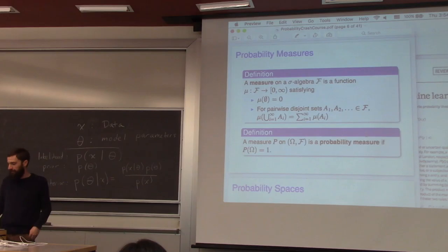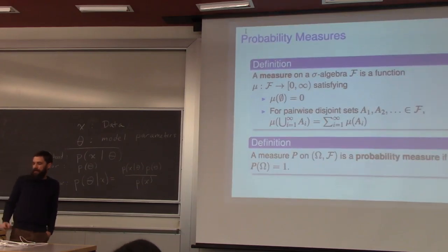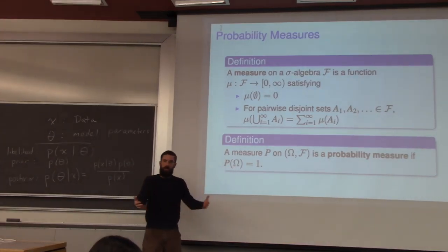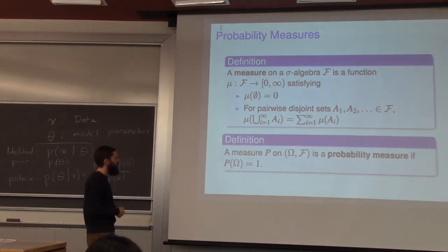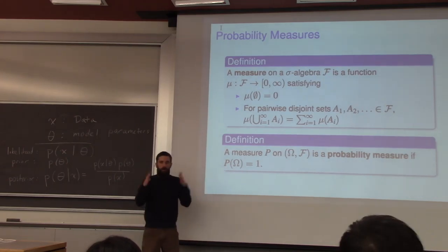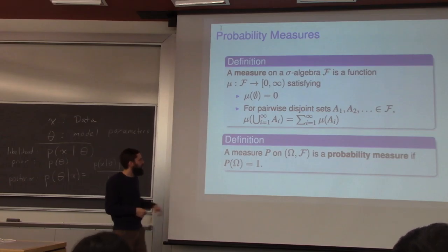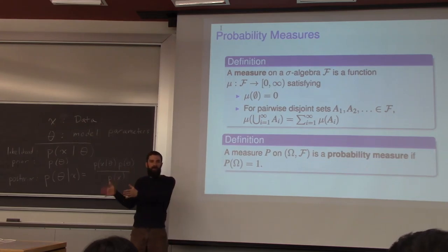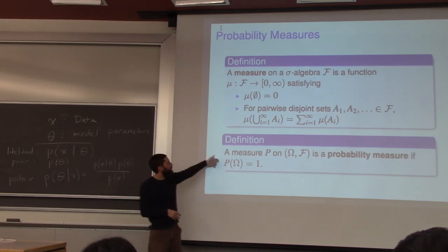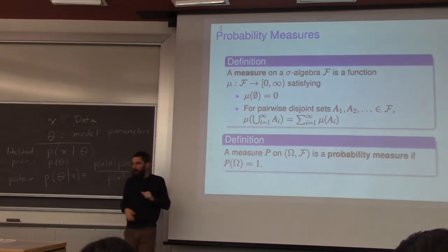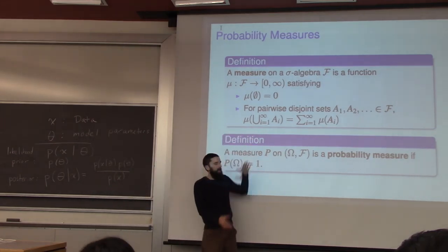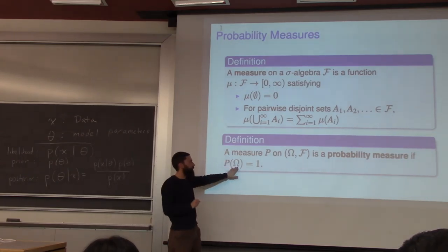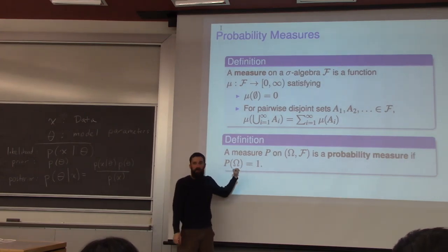Let's jump back into our probability review. We stopped at what is a probability measure. We talked about the sample space omega — all possible outcomes of an experiment — and subsets of the sample space are events. A probability measure, capital P, takes as input an event and returns a number between 0 and 1. This measure has to satisfy three rules: the key one being additivity — if you add up disjoint events, their probabilities just add up. And if you add up all possible events (the entire sample space omega), they must add up to probability one.